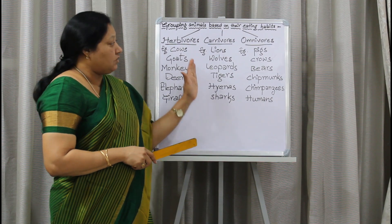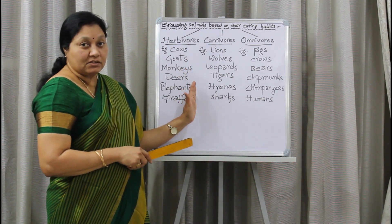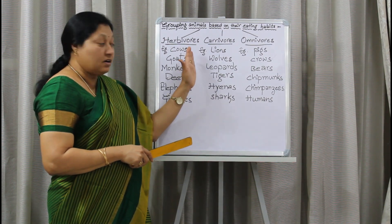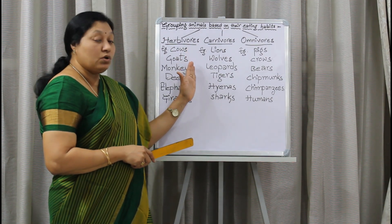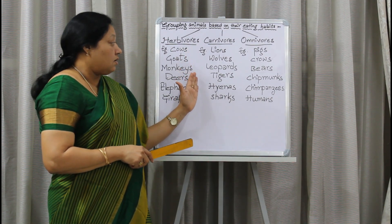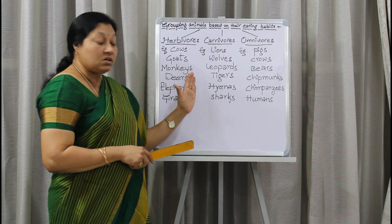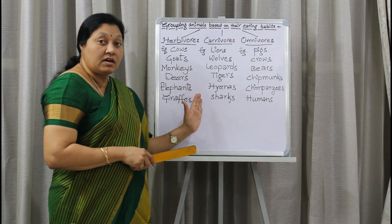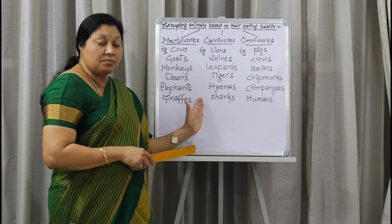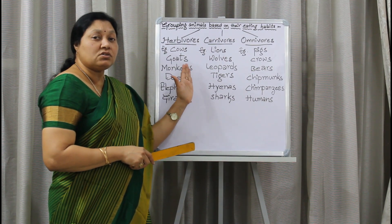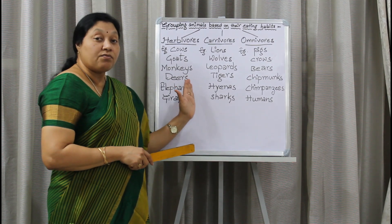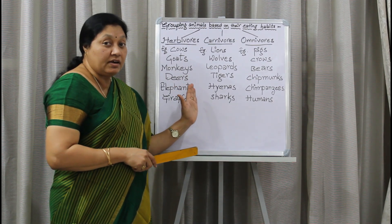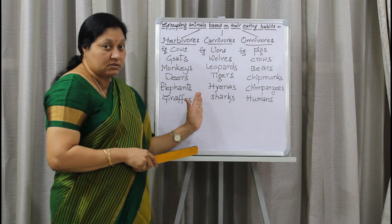Let us see a few examples. Lions, wolves, leopards, tigers, hyenas, and sharks — all these are flesh-eating animals.